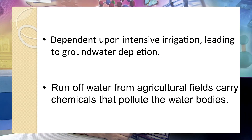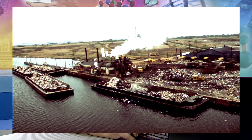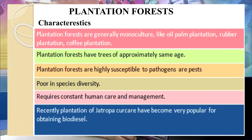Such ecosystems are dependent upon intensive irrigation, leading to groundwater depletion, and runoff water from agricultural fields also adds chemicals and pollutes water bodies. This is a picture of our river which has received large numbers of pollutants from sewer lines. Next is plantation forest. Plantation forests are generally monoculture — oil palm, rubber, coffee, etc. Plantation forests have trees of approximately the same age and are highly susceptible to pathogens.